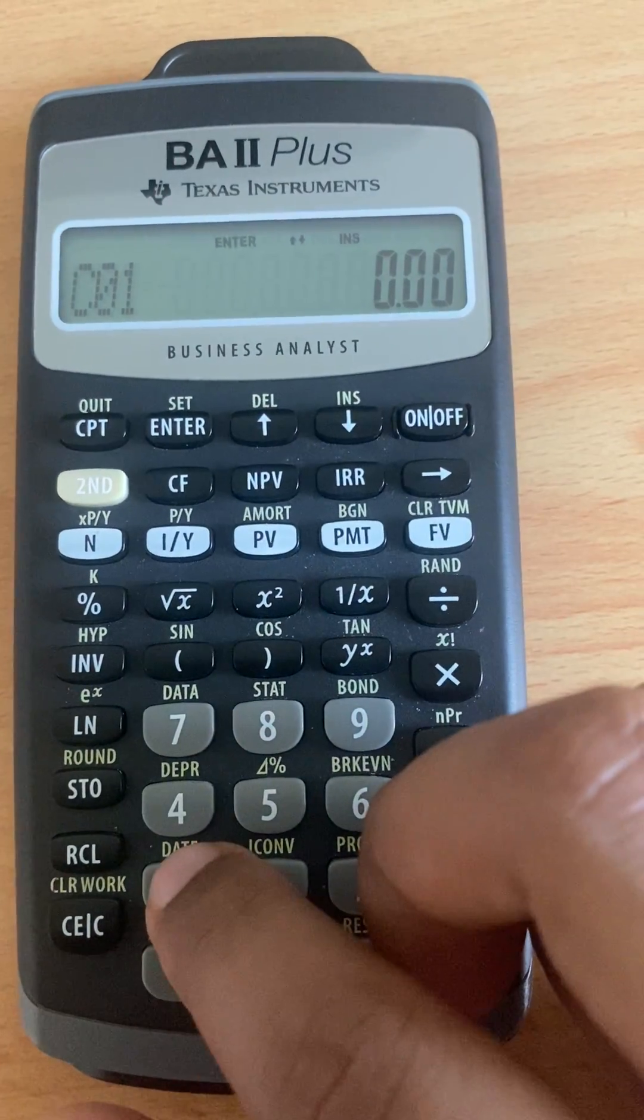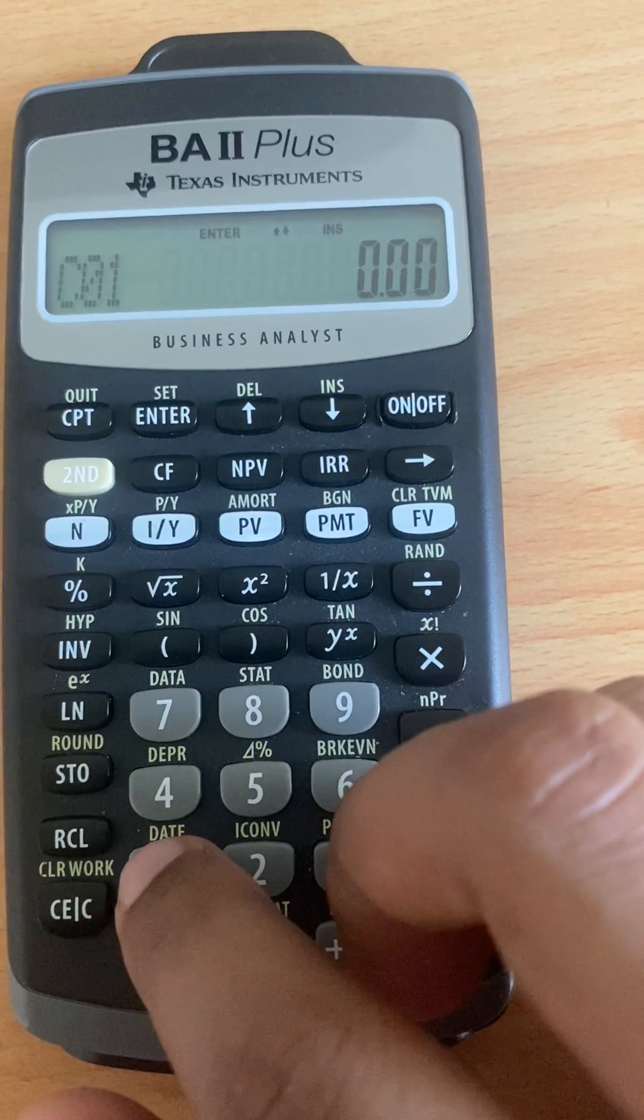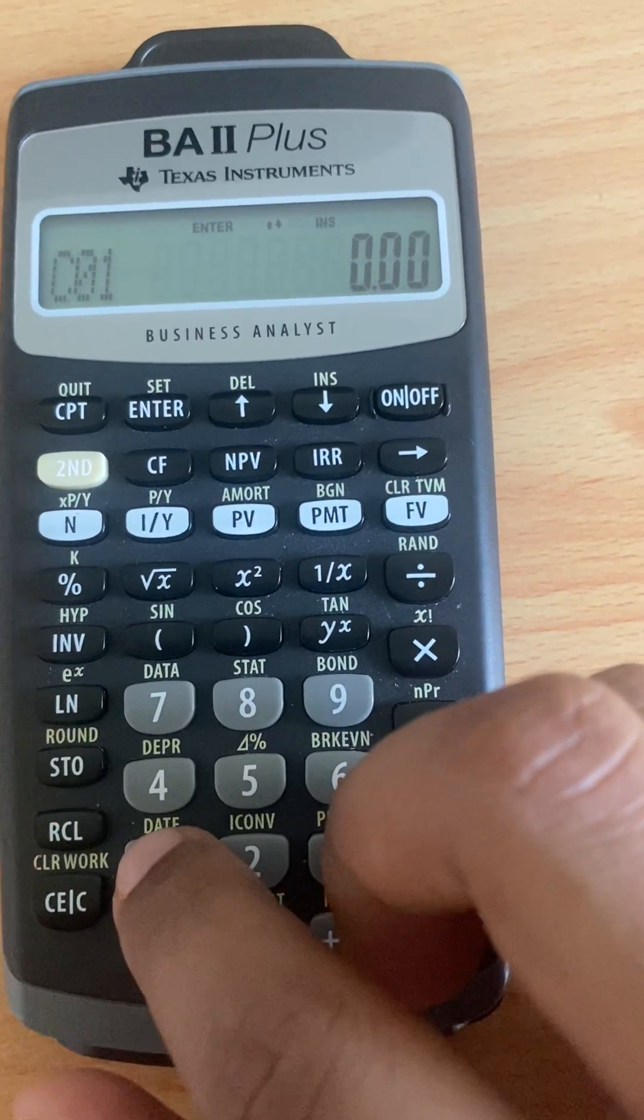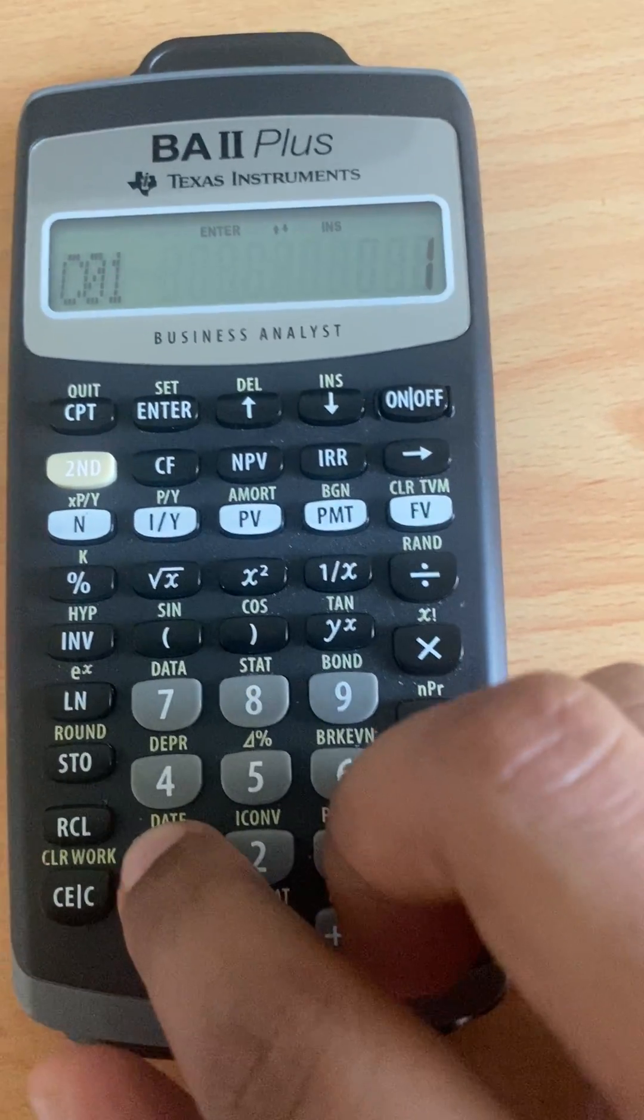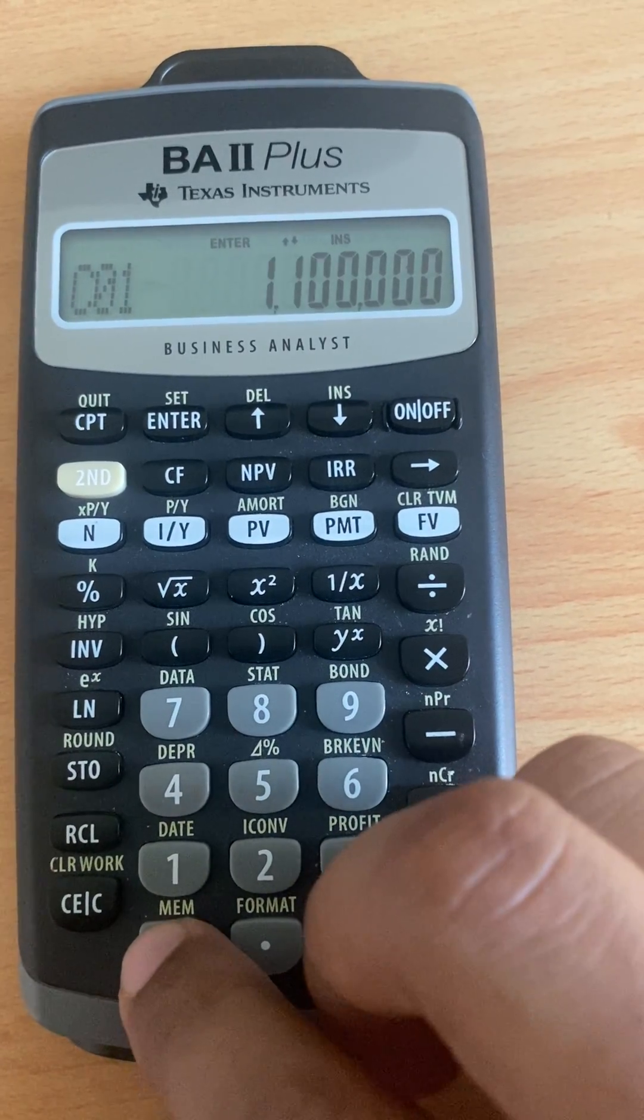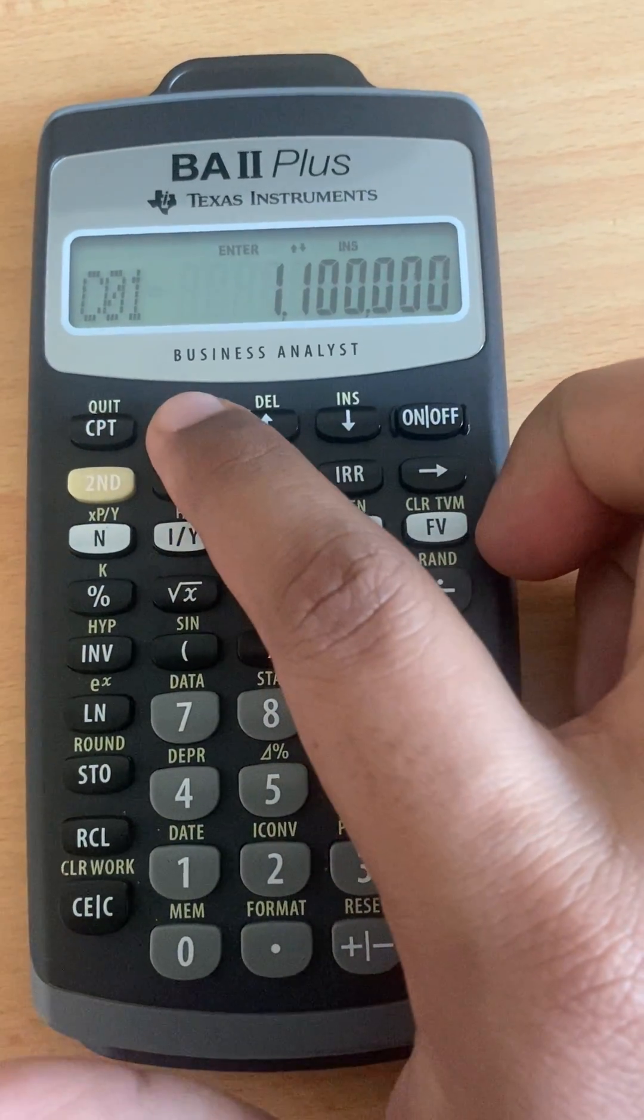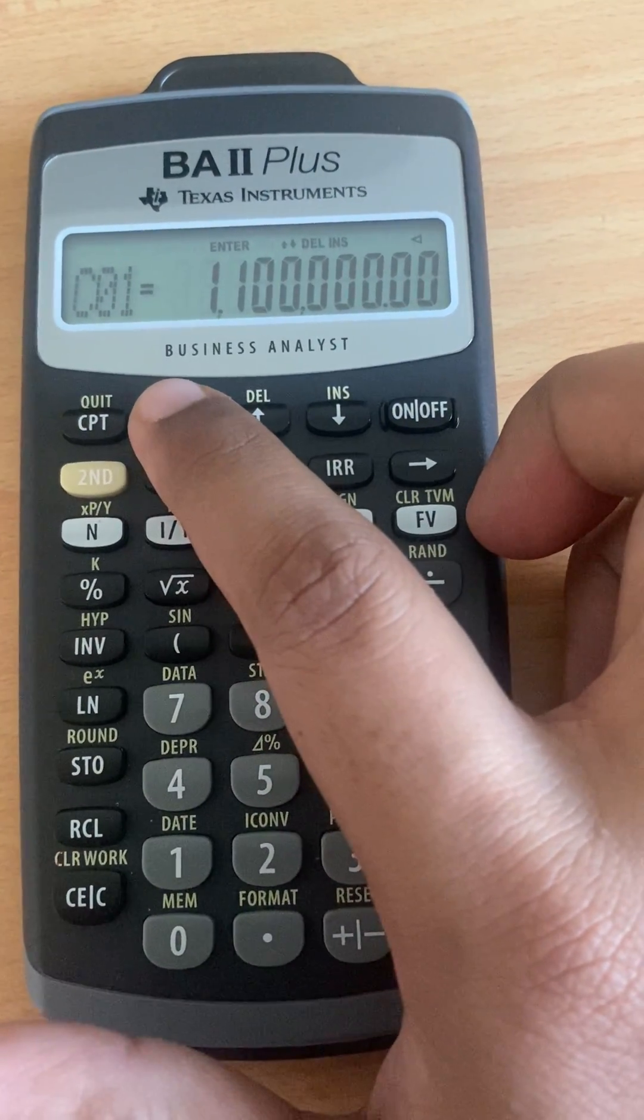Okay, so we put the cash flow from year 1 to year 5 is 1,100,000. So we press 1,100,000, alright? Press enter because this is inflow, so no need to put negative sign.